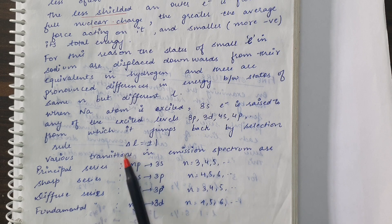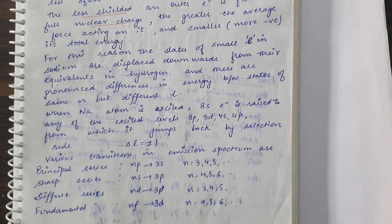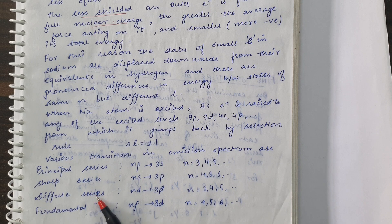According to the selection rule ΔL = ±1, the emission spectrum of sodium atom will be obtained, and the sodium atom's emission spectrum also consists of 4 series: the principal series, sharp series, diffuse series, and fundamental series.